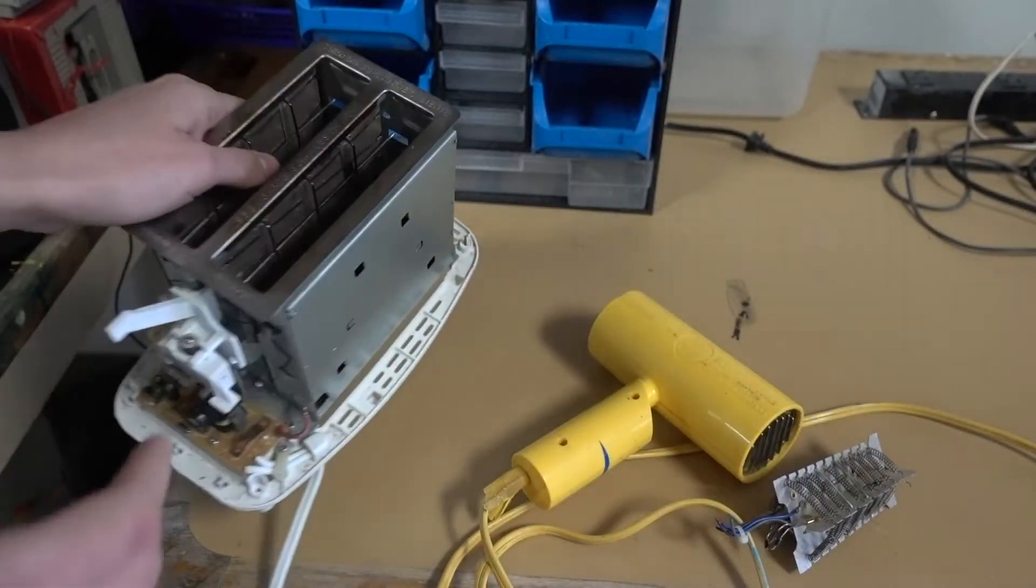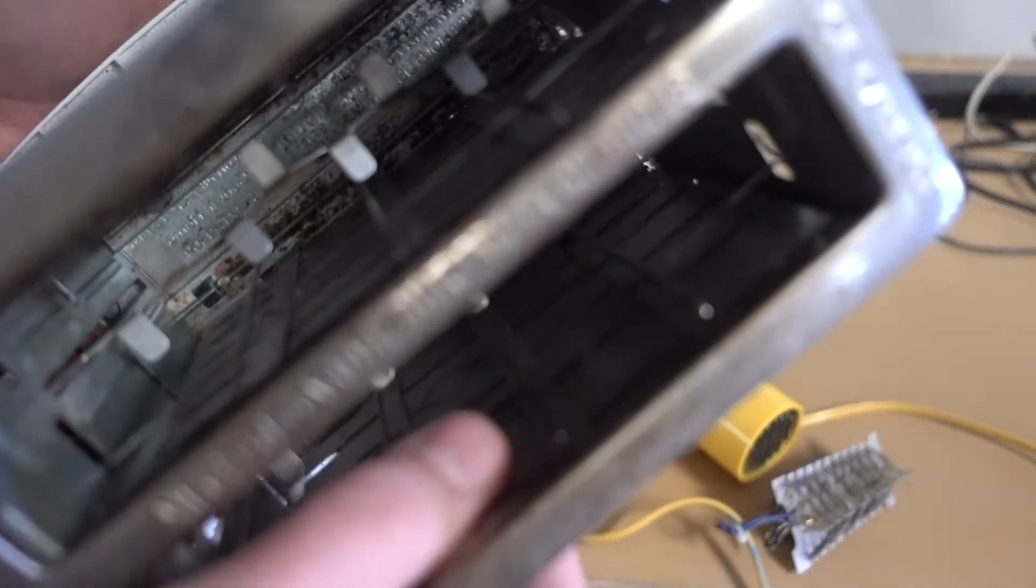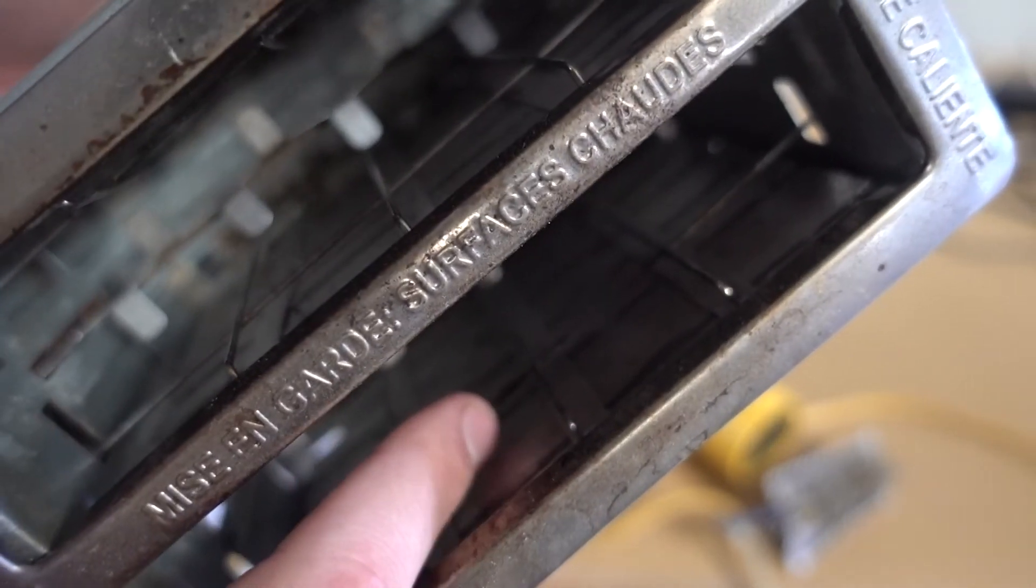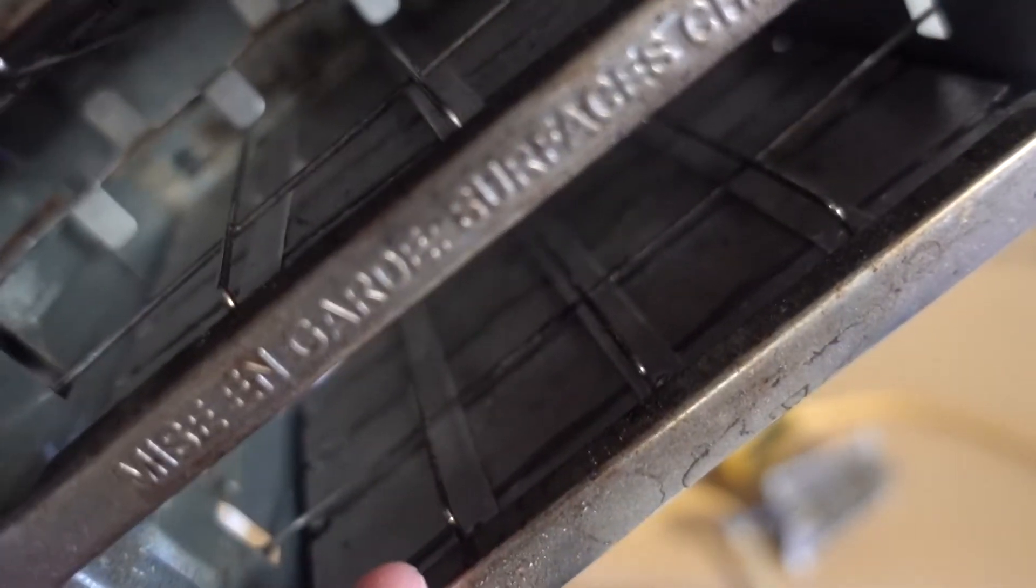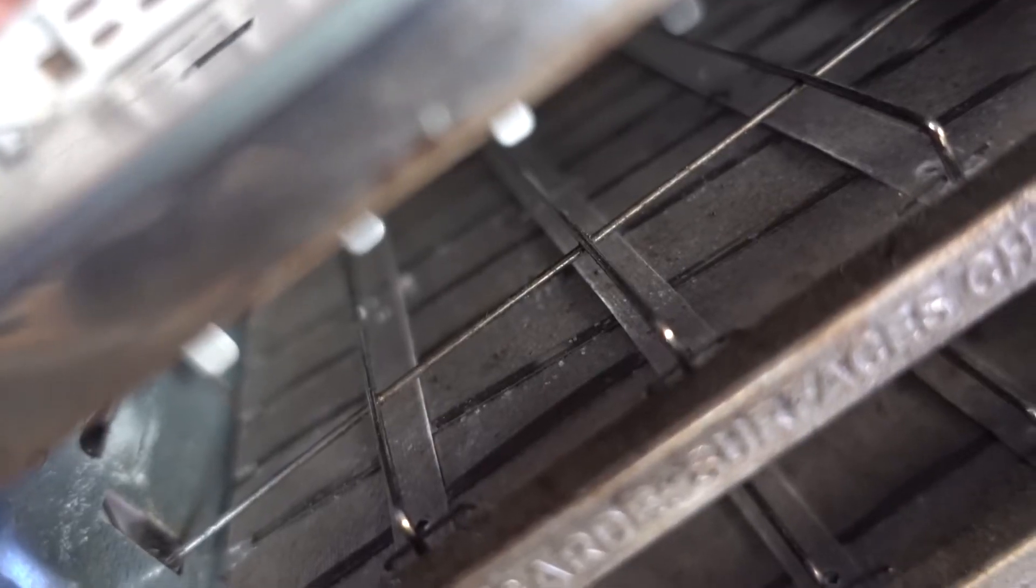Inside the toaster we can find nichrome in these little strips on the walls. See if we can get ourselves in focus there. Right about there.